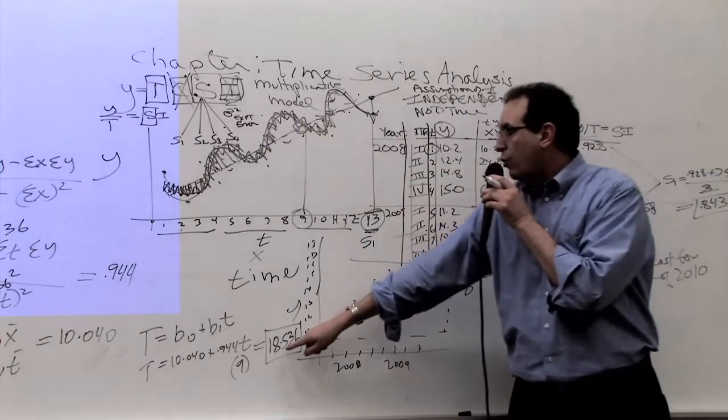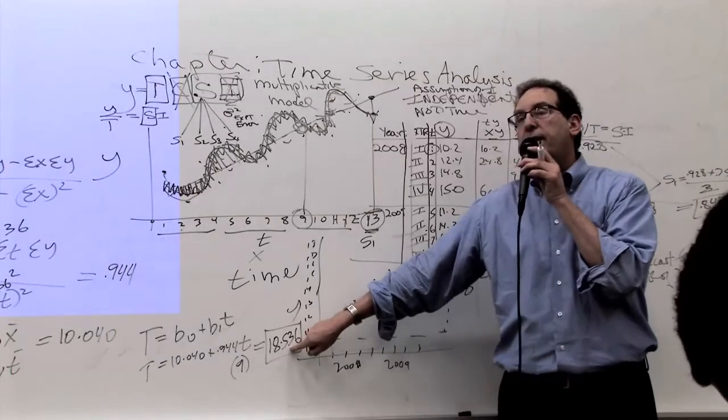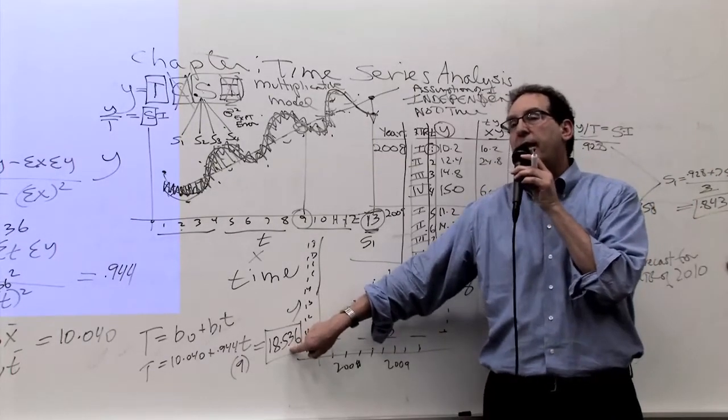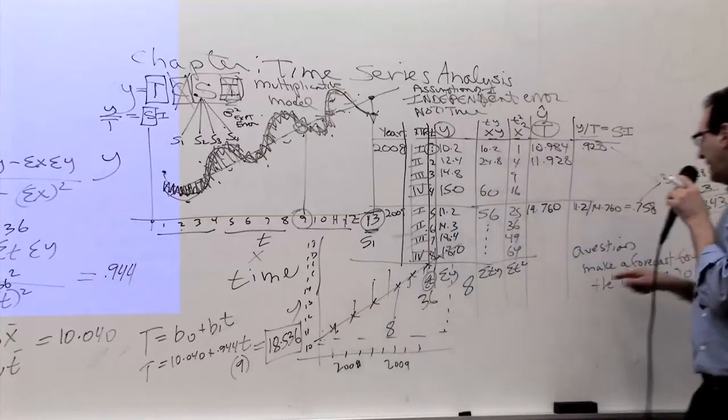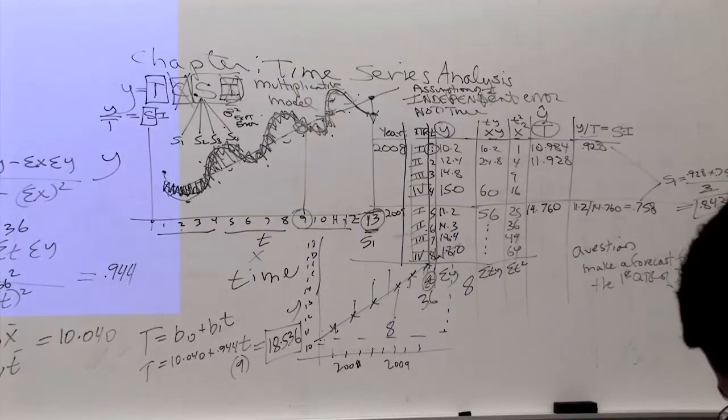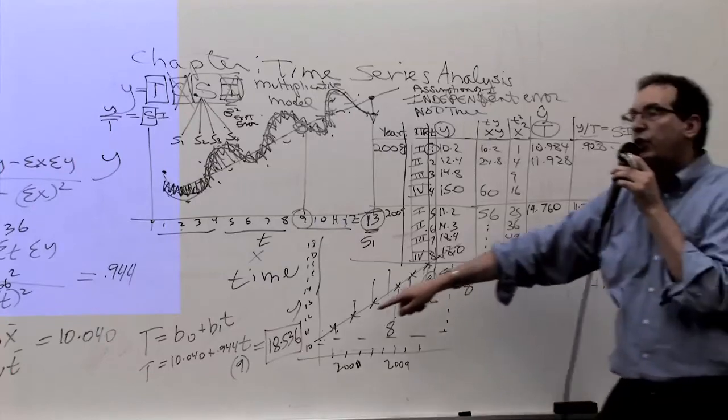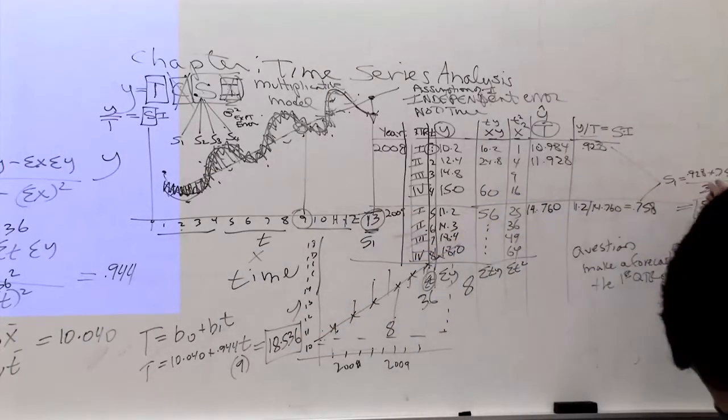But now we know that this quarter of the year is what? Historically speaking, that first quarter of the year is down by how much? It's down by about 15% off basically its average. And therefore, how do you want to take this number and adjust it according to the S1?